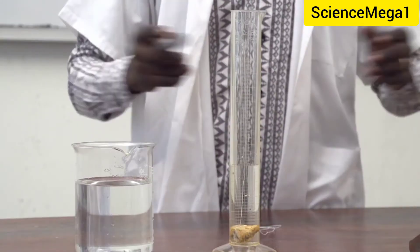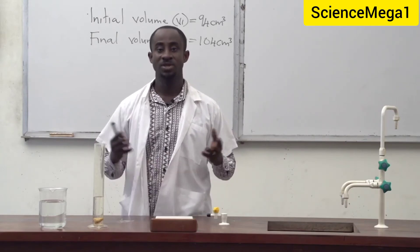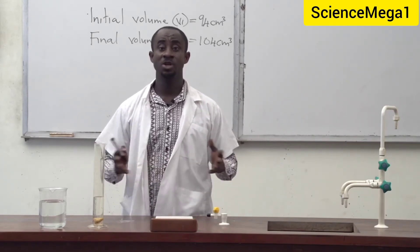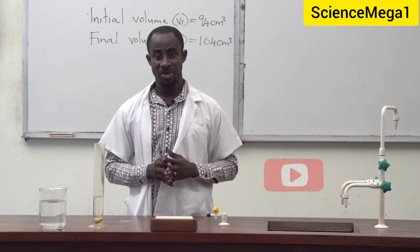The volume of the water displaced by the irregular solid is equal to the volume of the irregular solid. Therefore the volume of the irregular solid will be equal to V2 minus V1.